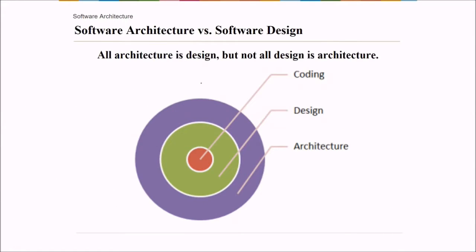So software architecture and software design, first you make the architecture and the embodiment of this architecture inside you make a design and then following these architecture and design issues you code. So all architecture is design, but not all design is architecture.